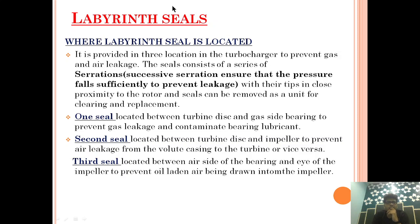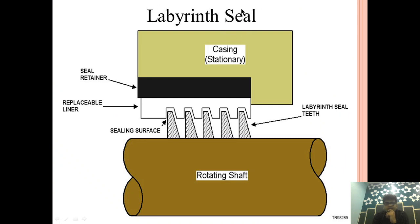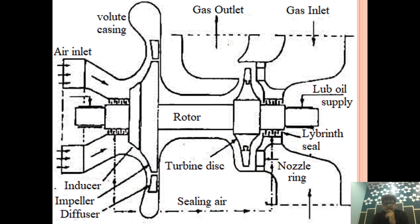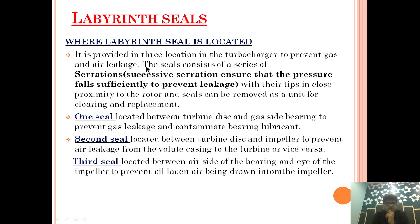The first question that comes to mind is where the labyrinth seal is located. The labyrinth seal is located in three locations in the turbocharger. It is provided to prevent gas and air leakage. The seal is provided to prevent contamination — meaning it prevents air or exhaust from entering the lubrication system. This seal consists of a series of serrations, and successive serrations ensure that the pressure falls sufficiently to prevent leakage.